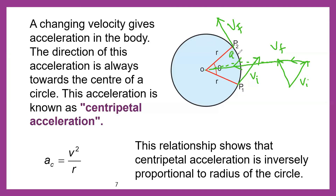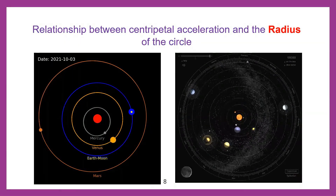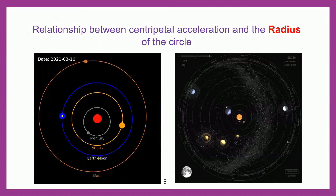Here is the formula for centripetal acceleration: AC equals v squared over r. This relationship shows that centripetal acceleration is inversely proportional to the radius of the circle. The planets closer to the sun, like Mercury, Venus, and Earth, move faster.